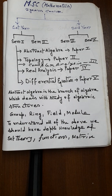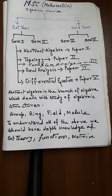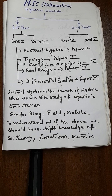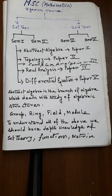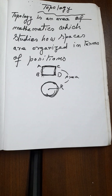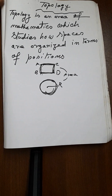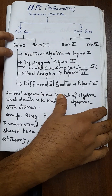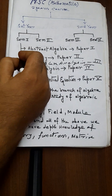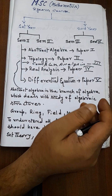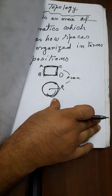Hey guys, welcome to my third video of books for MSc Mathematics. In my last two videos, I have already described the structure of the MSc course as well as the books we need to buy for the first two papers — abstract algebra and topology. Today I'll be letting you know about the books for the other three papers: complex analysis, real analysis, and differential equation. So let's start with complex analysis.